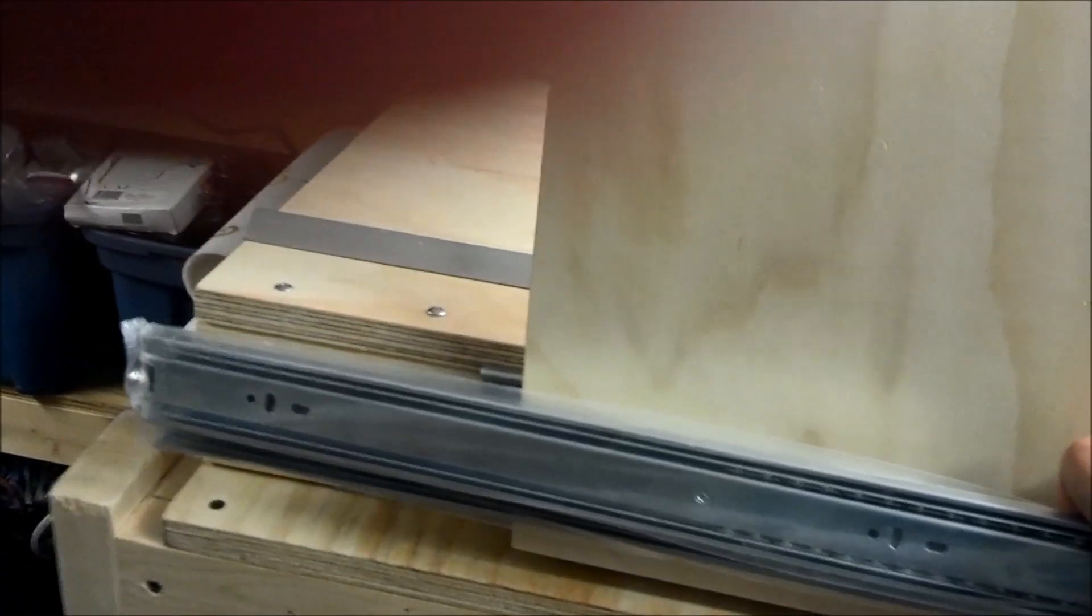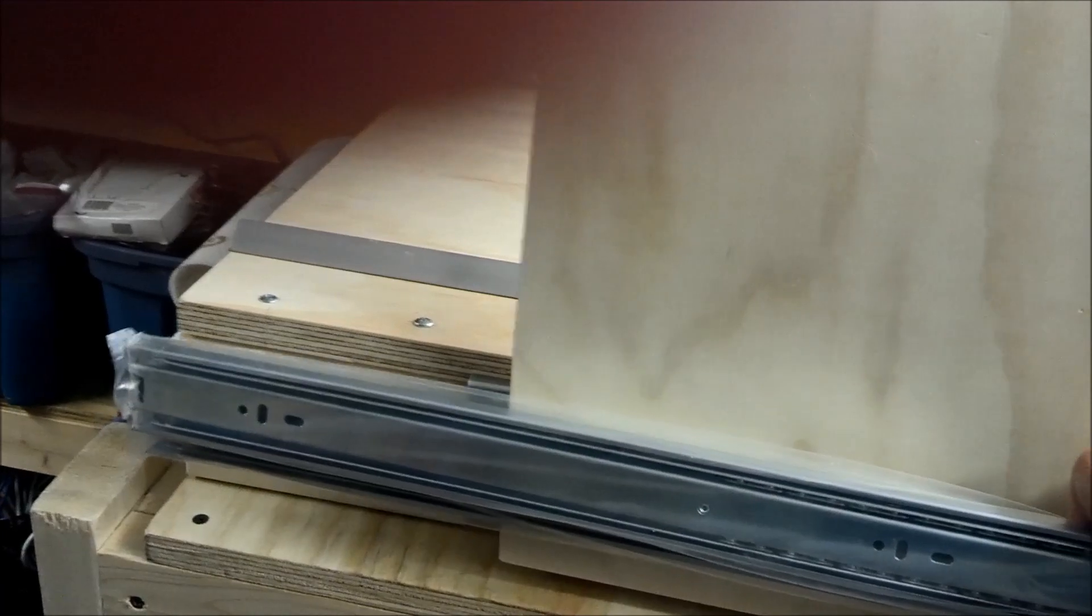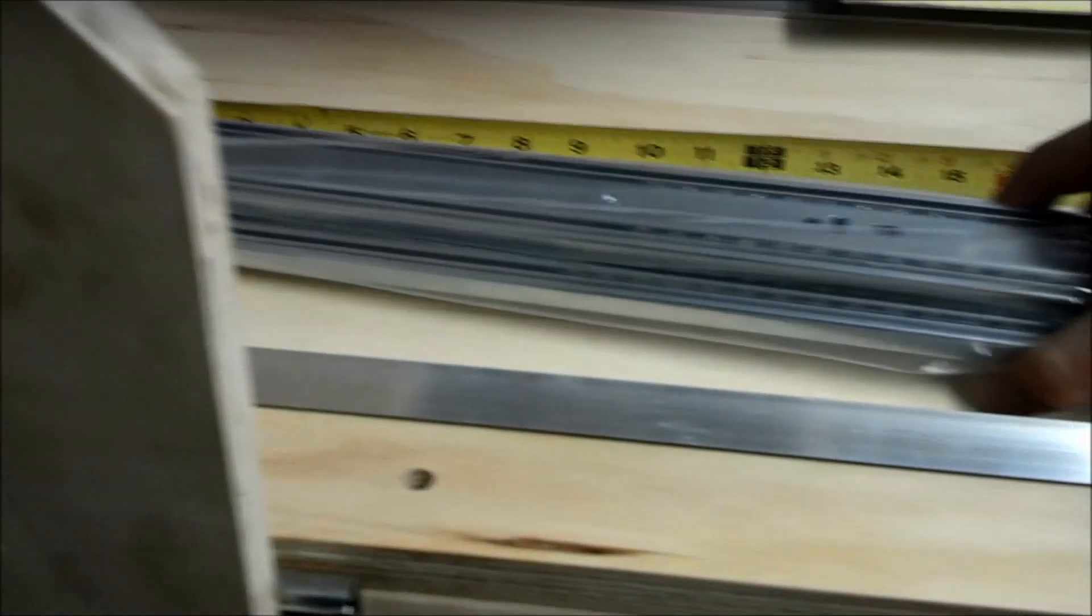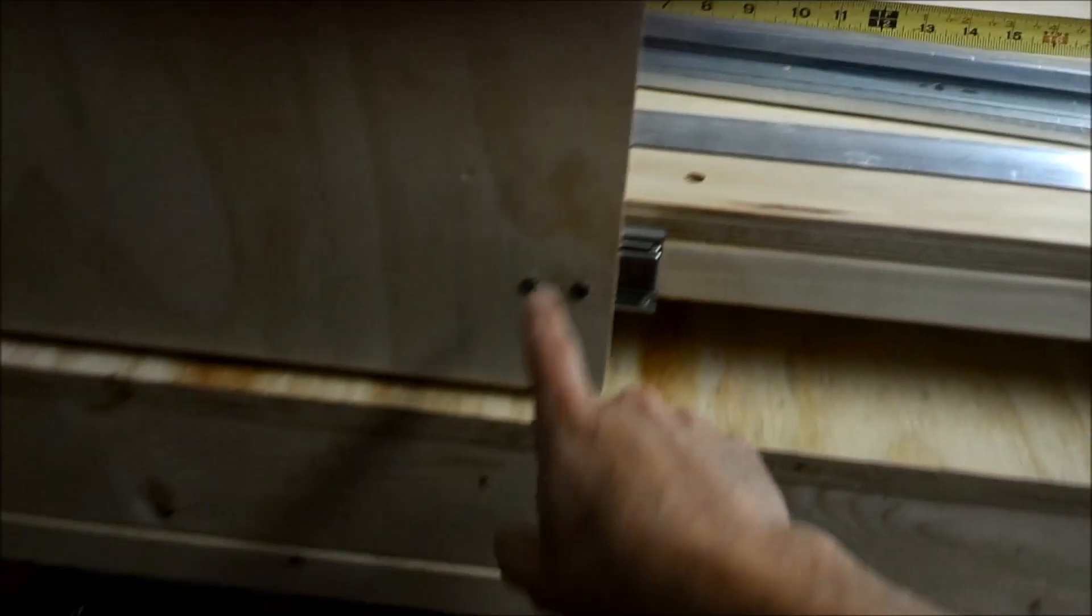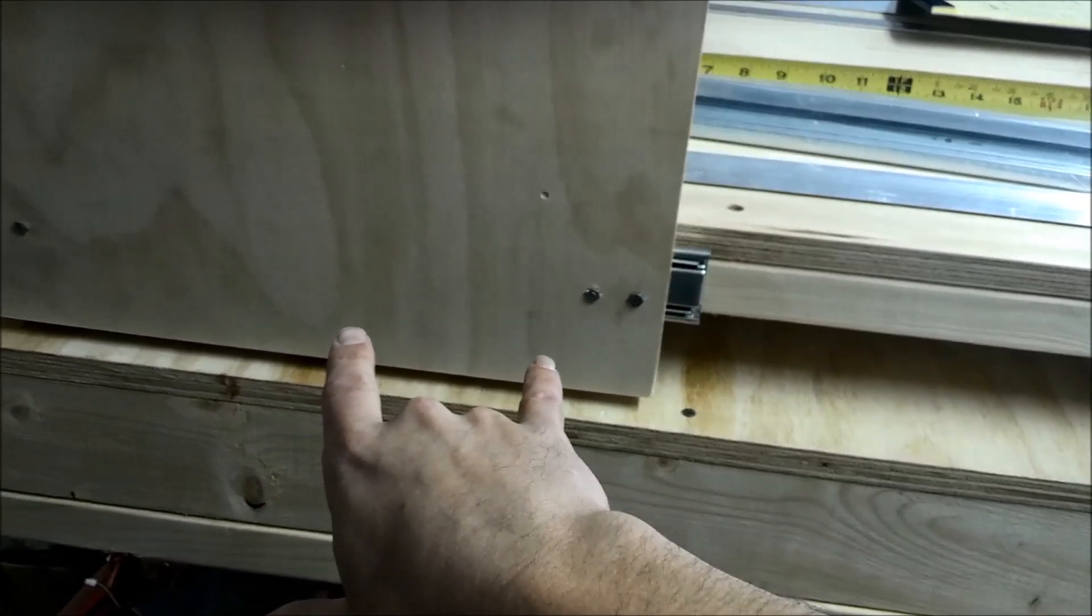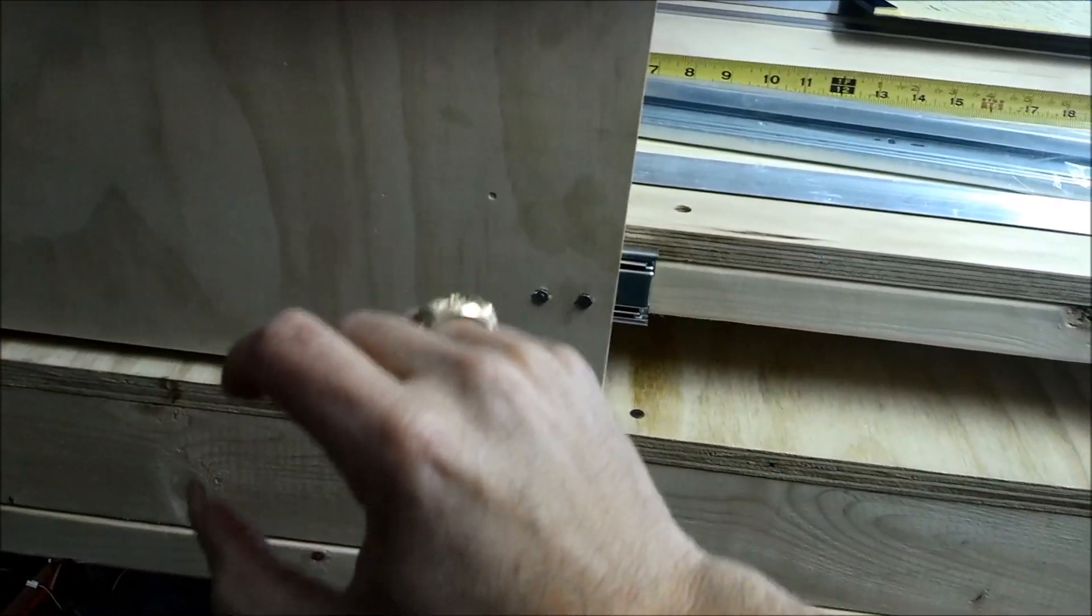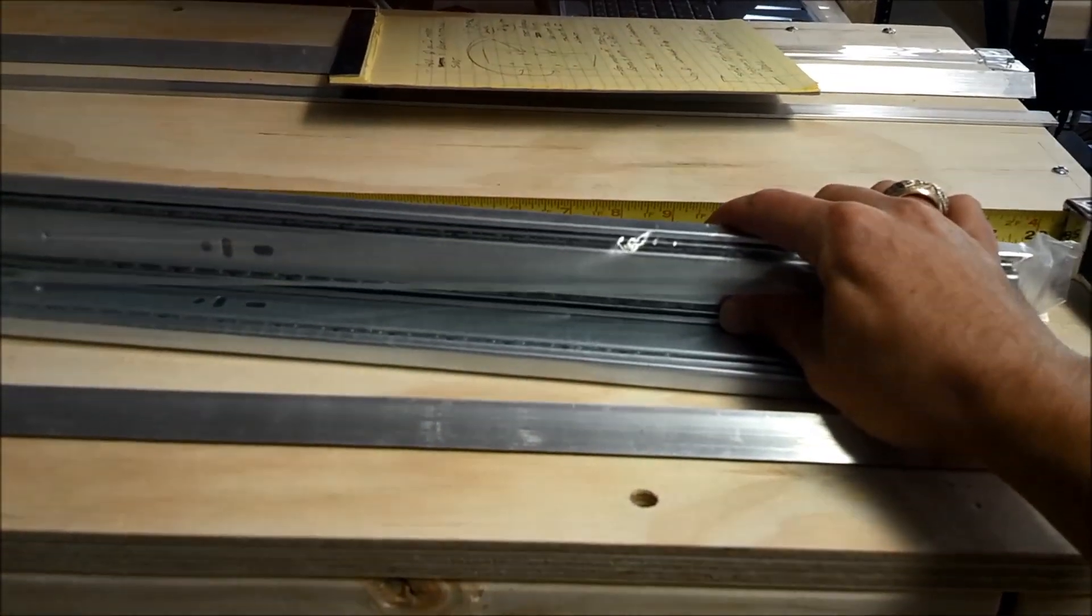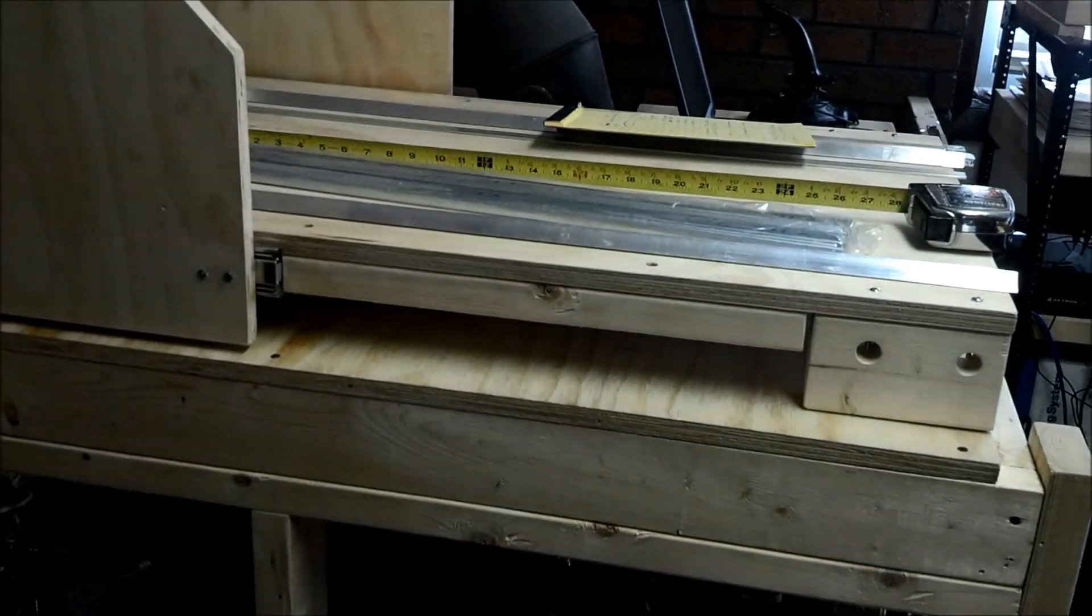And because these are longer, I can start them over on the edge and have most of this covered. The other thing I found with these is the more collapsed they are, the less give they have. So with longer tracks, I think that will greatly reduce a little bit of the play.